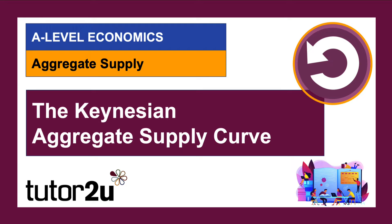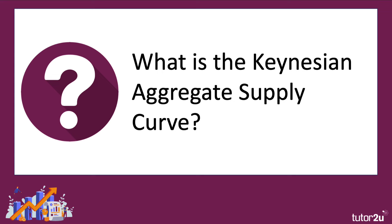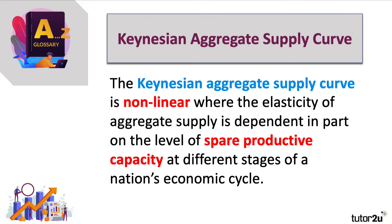Hi there. Welcome to a video where we're going to take a look for a few minutes at the Keynesian aggregate supply curve. So what is it? Well, basically it's a non-linear supply curve where the elasticity of aggregate supply is dependent in part on how much spare productive capacity a country has at different stages of an economic cycle.